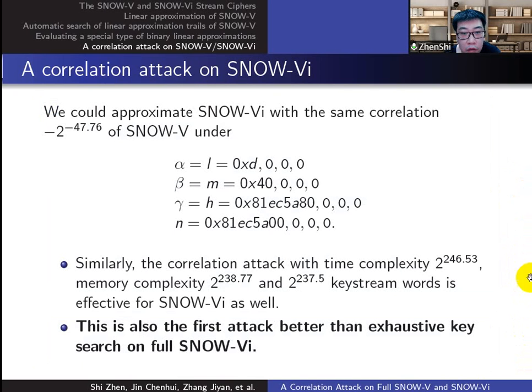So the results of SNOW-5 are also appropriate for SNOW-6, and the correlation attack on SNOW-5 is effective for SNOW-6 as well. This is also the first attack better than exhaustive key search on full SNOW-6.